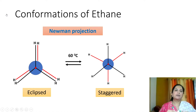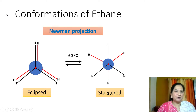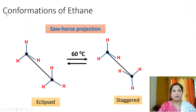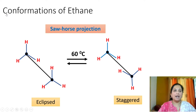Thus, the two extreme confirmations that the ethane molecule can have are the eclipsed confirmation and the staggered confirmation. Here, confirmations of ethane — eclipsed and staggered — are shown in Sawhorse projection. As you know, in Sawhorse projection, we look at the molecule from sideways, and the carbon-carbon bond makes an angle with the plane of paper.